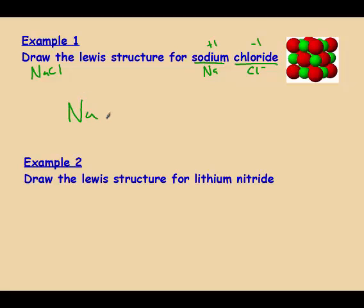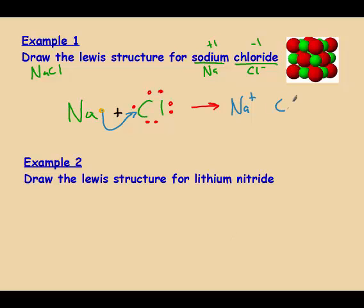Sodium starts with one electron and chlorine starts with seven. What's happening is sodium is going to lose an electron to chlorine. So sodium just has a plus charge, and then chlorine should have seven dots and an X for the gained electron, with a negative one charge. The negative ion is placed in brackets so you know the dots and X's belong to chlorine and not to sodium.